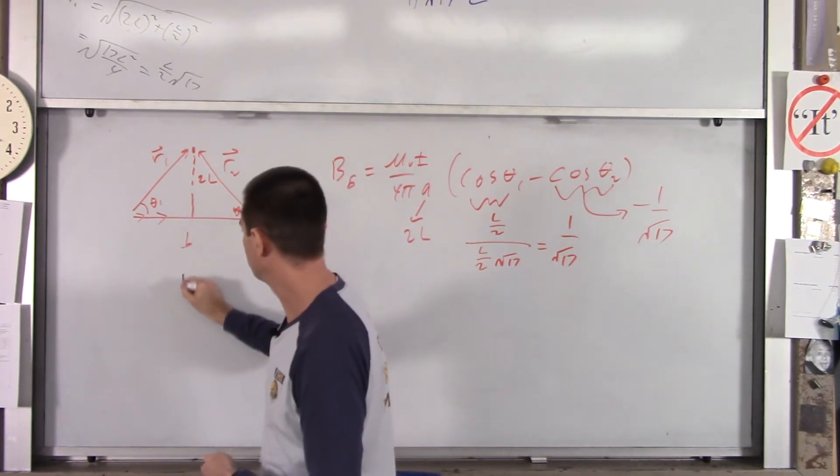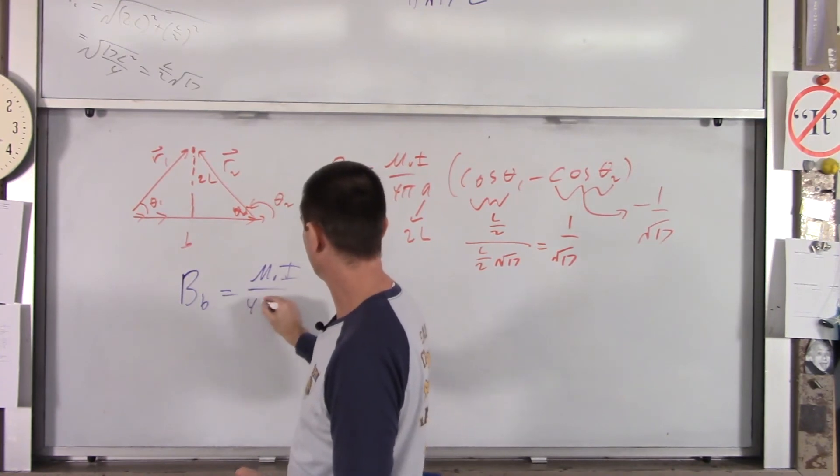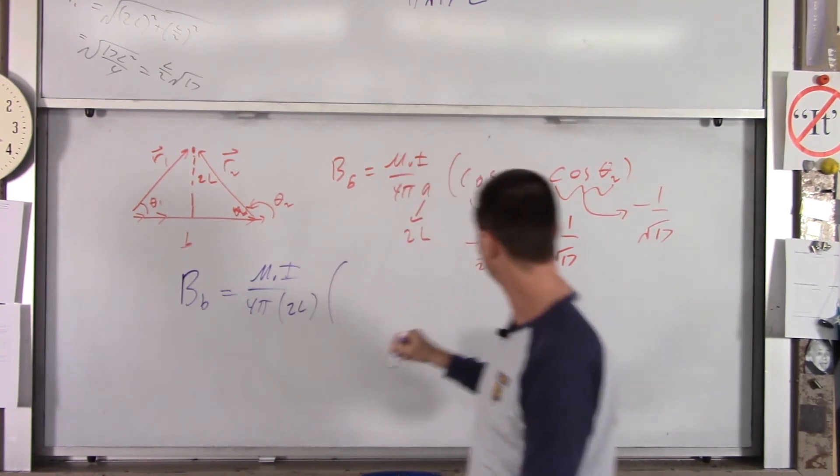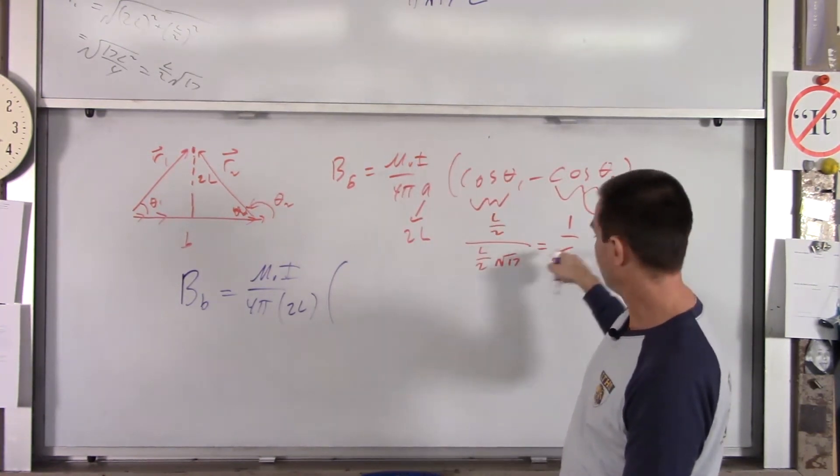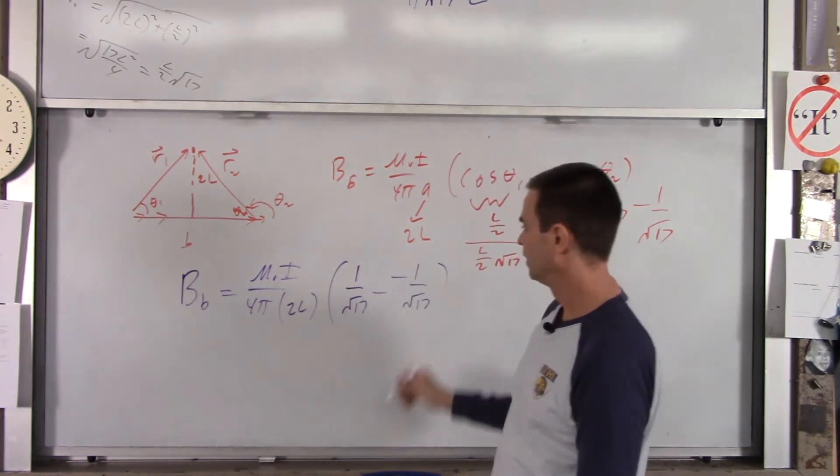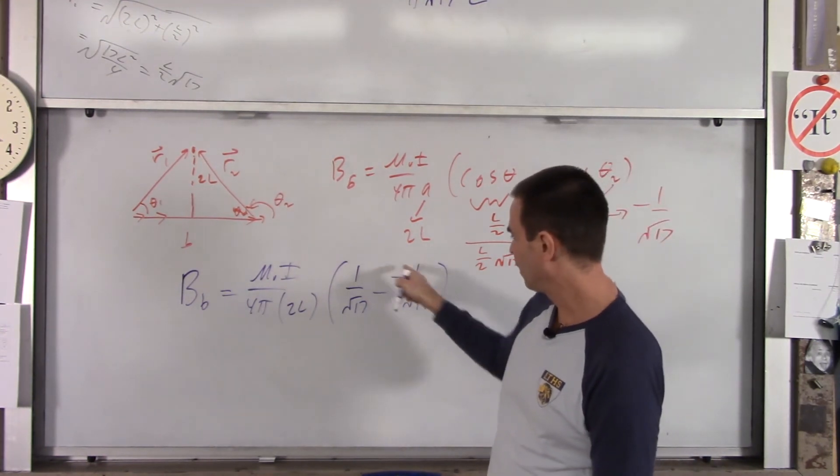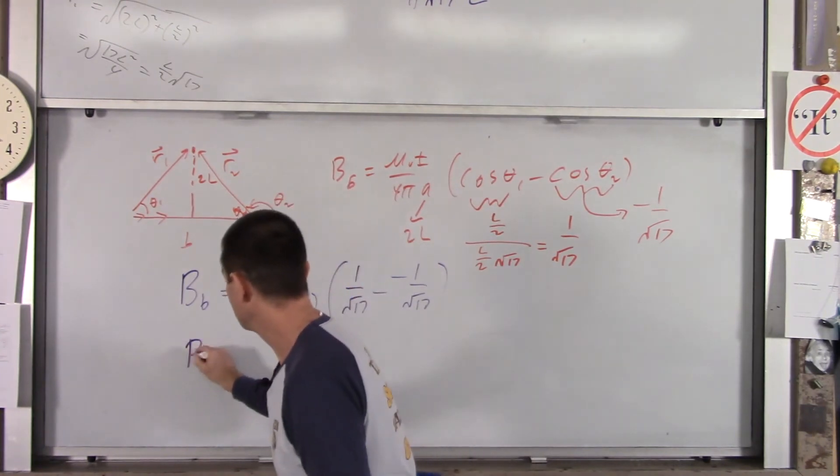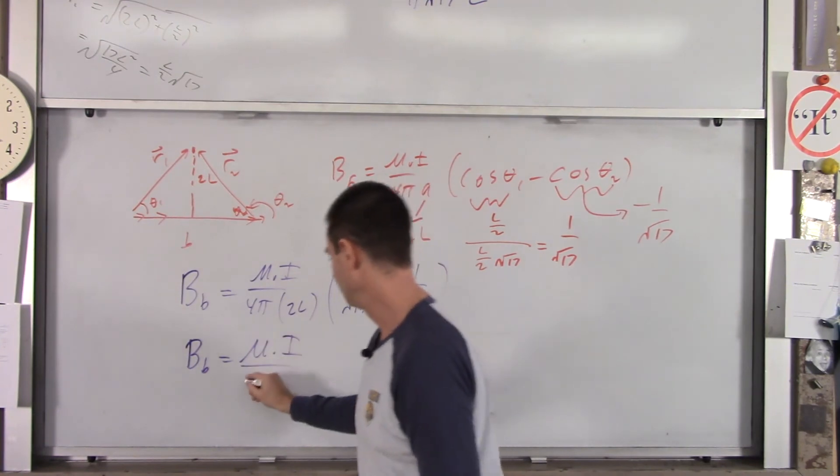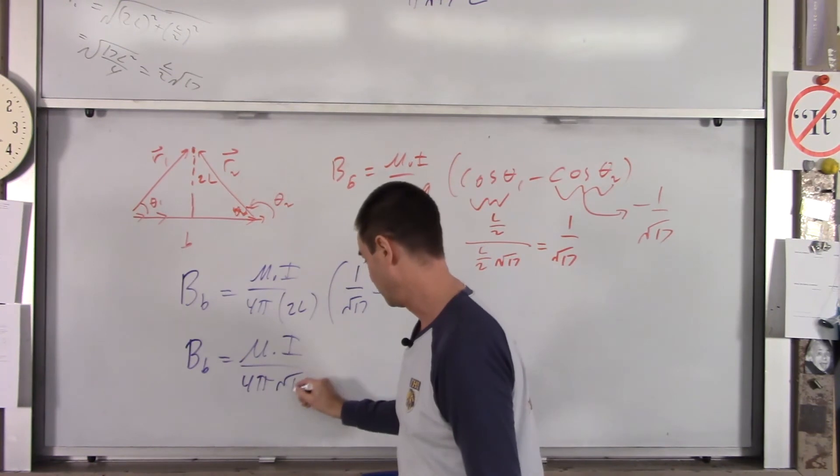So we pretty much have it. B sub B is mu naught I over 4 pi. A in this case is 2L, times you get 1 over root 17 minus negative 1 over root 17. So now we're in math class again. This turns into 2 over root 17. That 2 up there and this 2 down there will drop out. And you get B sub B is mu naught I over, still got our 4 pi. That 2 and that 2 drop out, and you got your root 17 down there.